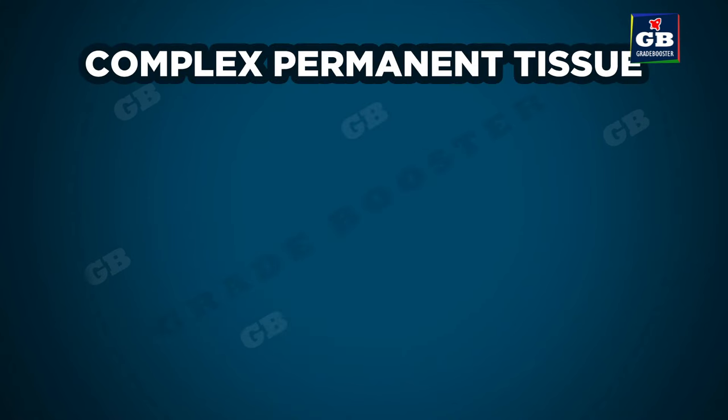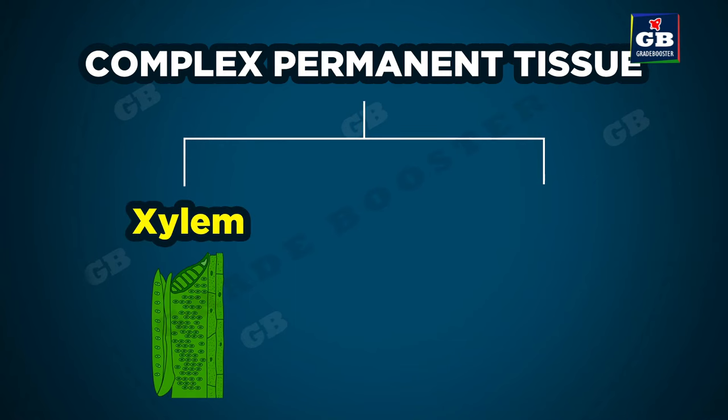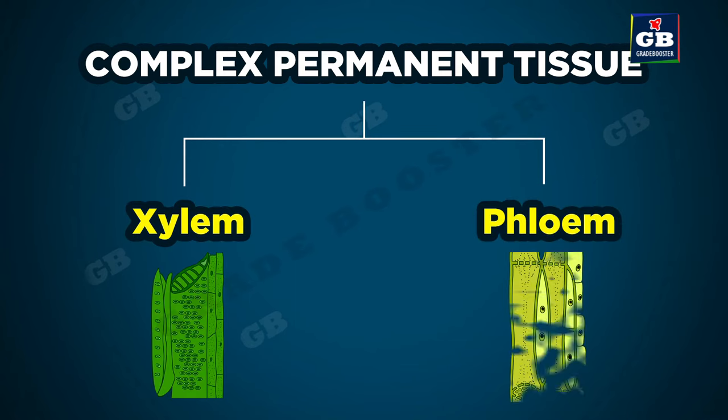The complex permanent tissues in plants are of two types: 1. xylem and 2. phloem.